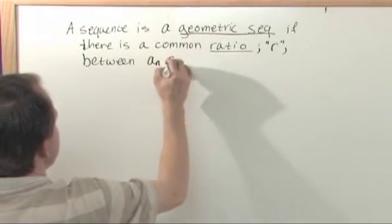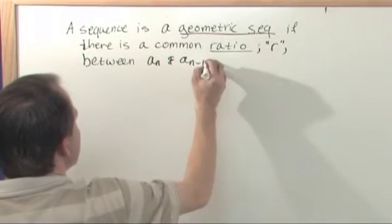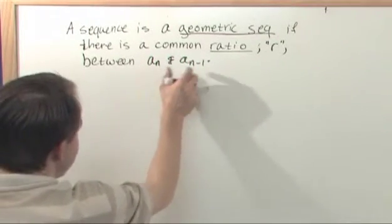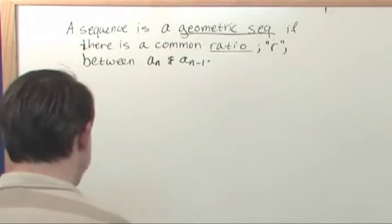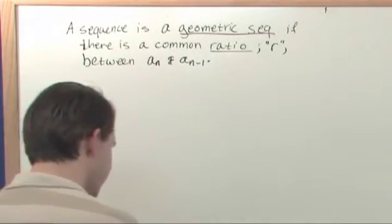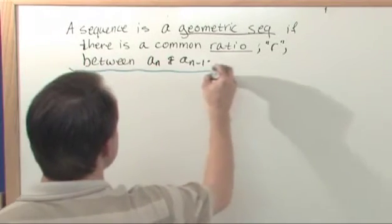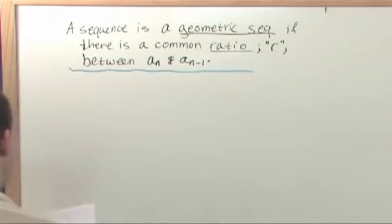Between a sub n and a sub n minus 1, which just means between elements, between element here and the element right before it. So there's a common ratio. So let's just go into an example because you can read definitions like this all day long and still not really understand what it means, but a single example will make it clear.